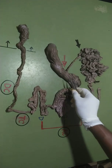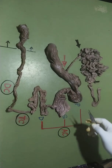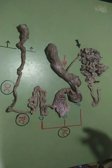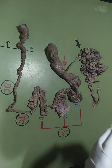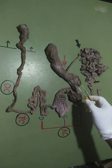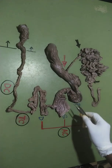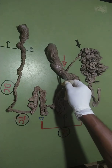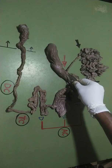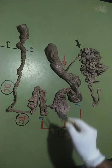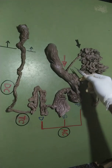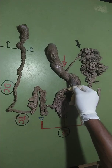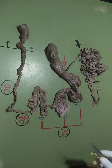The ileocaecocolic junction — the term brings together the names of the three structures which form this junction. The ileum joins the large intestine at this point, which is called the ileocaecocolic junction. This junction is made up of the ileum, the cecum, and the colon.